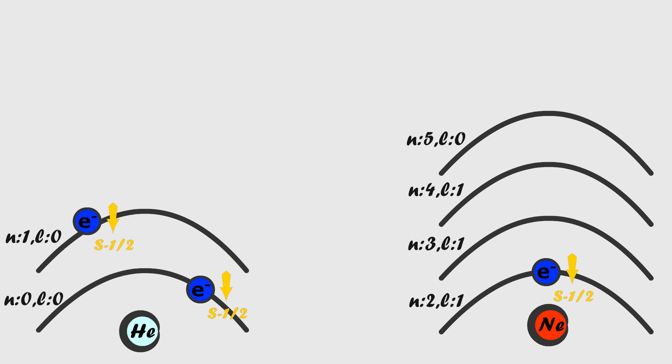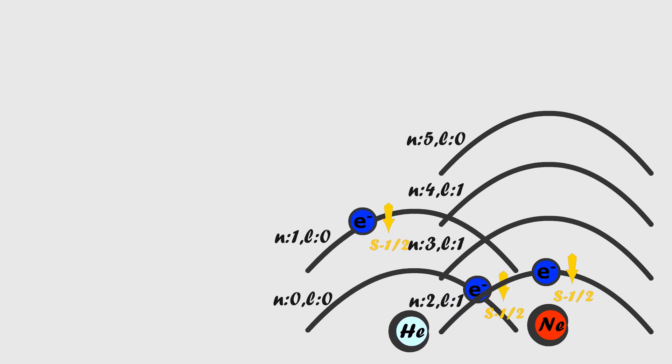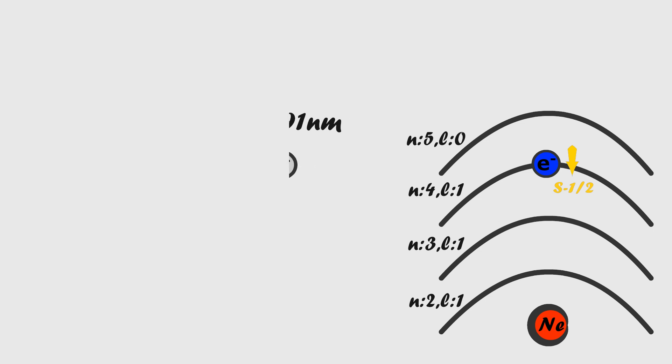Since helium atoms in the metastable state can remain excited for a relatively long time, the probability of many helium atoms simultaneously exciting many neon atoms increases. The excited neon atoms quickly emit photons and return to their stable state.